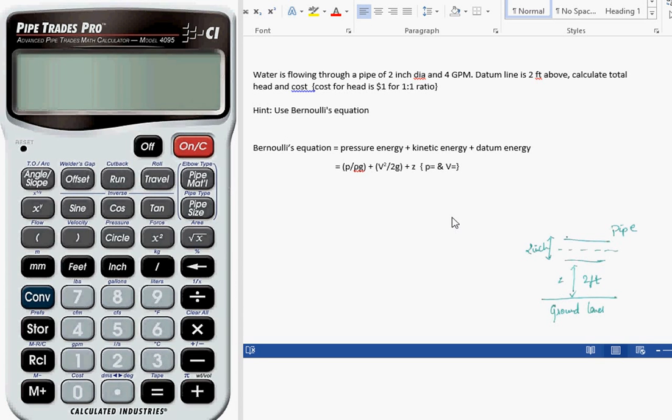As he is concerned about the pipe is installed 2 feet above from the ground level, which is the datum energy. The hint given is use Bernoulli's equation. We know the Bernoulli's equation is pressure energy plus kinetic energy plus datum energy.